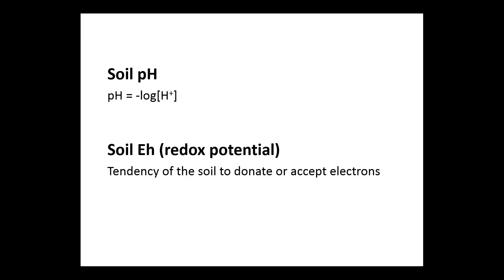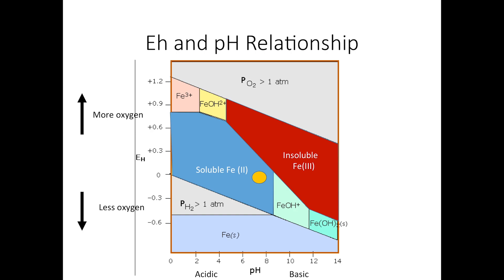Soil pH is relatively straightforward — it's the concentration of hydrogen atoms in the soil. Soil EH is more complicated; it is the redox potential, or the tendency of the soil to donate or accept electrons from atoms in that environment. The easiest way to understand these concepts is to look at this figure, which is called a Pourbaix diagram. Soil environments with low pH and low EH are more likely to contain iron 2. If pH or EH increases, iron is more likely to become oxidized and exist as iron 3.